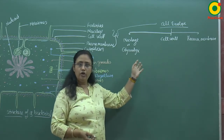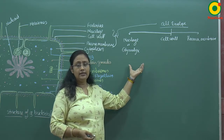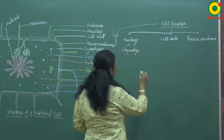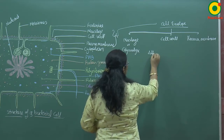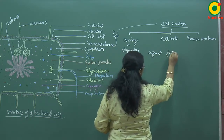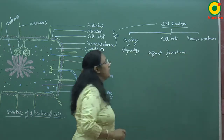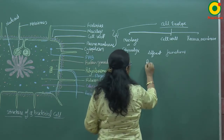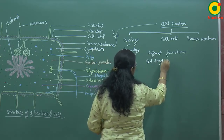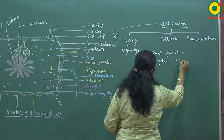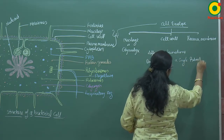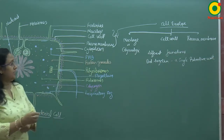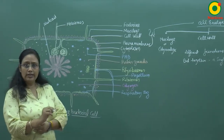These three membranes perform different functions, but together they act as a single protective unit for the bacterial cell. Glycocalyx, cell wall, and plasma membrane each have different functions, but together they serve as a single unit for the protection of the bacterial cell.